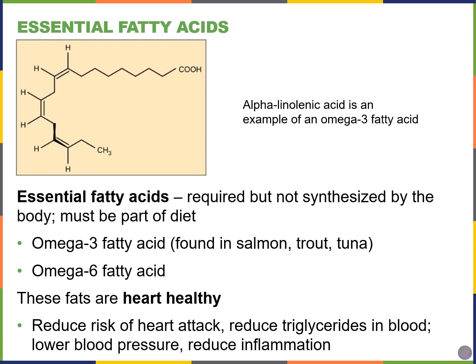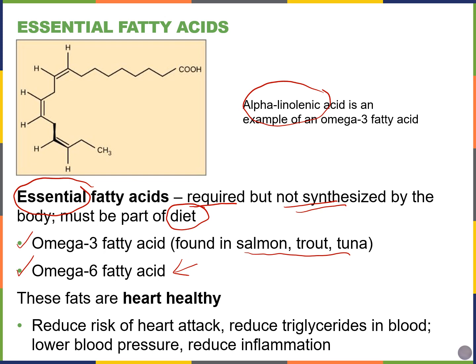In terms of types of fatty acids, we also have a group called essential fatty acids. When you see the word 'essential,' it means the body requires it but cannot make it, so it has to come from our diet. Two examples are omega-3 and omega-6 fatty acids. Omega-3s are found in fish like salmon, trout, and tuna. Omega-6s are found in nuts like walnuts or pine nuts. The name omega-3 refers to the fact that the first double bond appears at the third carbon when numbering from the end of the hydrocarbon chain.